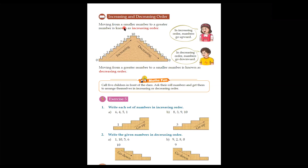So let's get started. Increasing and decreasing order. Increase means increasing. Here we have explained the concept. This order is increasing — it means 0, then increased to 1, 1 then increased to 2, 2 then increased to 3, then 4, 5, 6, 7, 8, 9, 10. So what happened here? The number increased. We started at 0 and it increased.